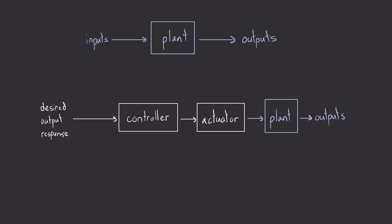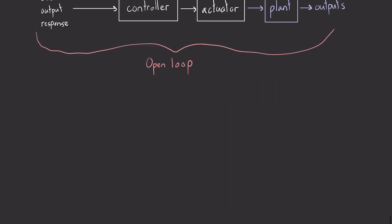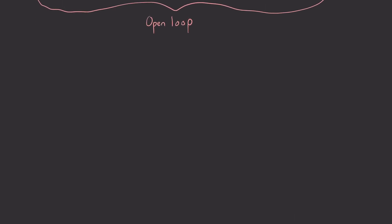And this is what's known as open loop control, because there's no feedback. A more important version of control, and in practice one that's used a lot more often, is known as closed loop control.